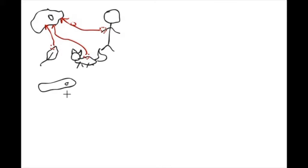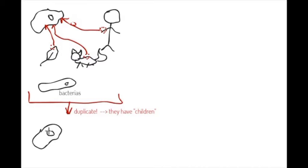Cells have the ability to duplicate, which means making copies of themselves, sort of having children. If we start with only one cell like this one, it can make a copy of its genetic material that here is a really small circle. And now we have two times the genetic material.